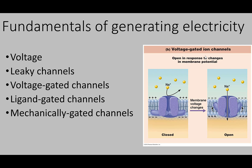The first thing we want to look at is voltage. Voltage is a separation of charged particles. When we talk about neurons, we say the membrane has a voltage — there is more positive outside the membrane than inside. The way we usually say it is: the inside of the cell membrane is more negative compared to the outside of the cell.